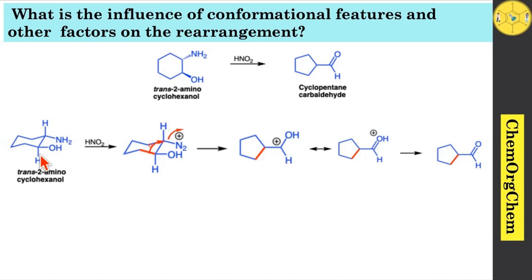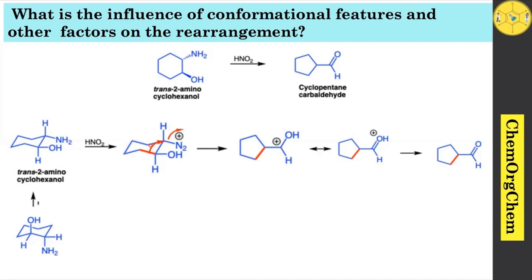The cyclohexane system quickly undergoes ring flipping to produce the corresponding ring-flipped structure. Comparing the two structures: in one structure both the amine group and the hydroxy group are present in the equatorial position; in the ring-flipped form both are in the axial position, experiencing 1,3-diaxial interaction. Therefore when you take trans-2-aminocyclohexanol, the equatorial-equatorial form is predominantly observed, which readily undergoes reaction to produce the corresponding cyclopentane carbaldehyde as product.